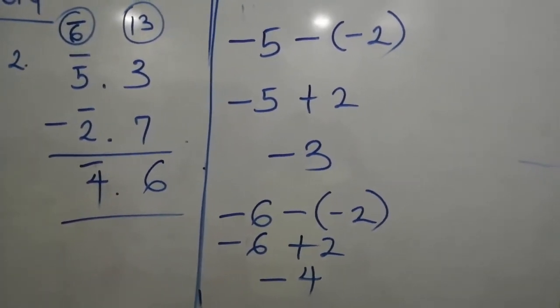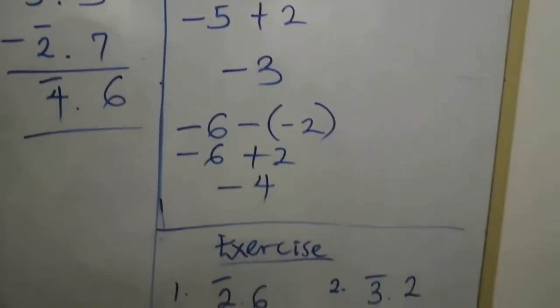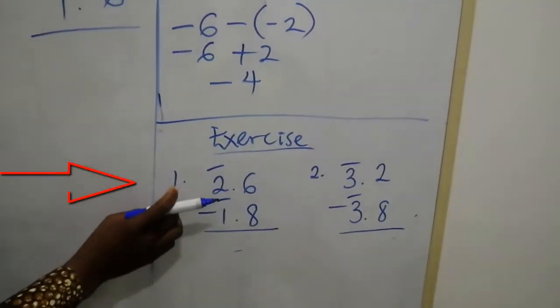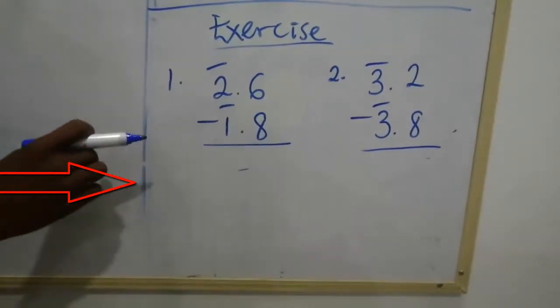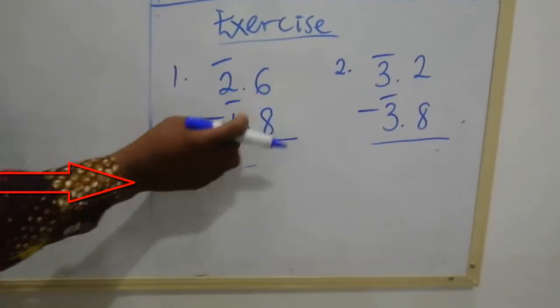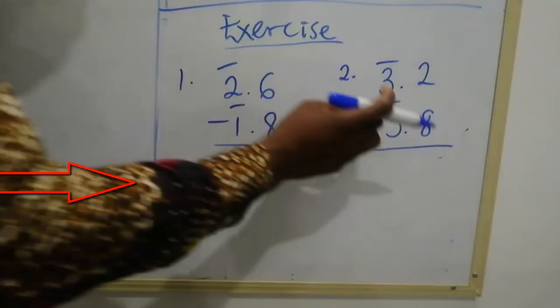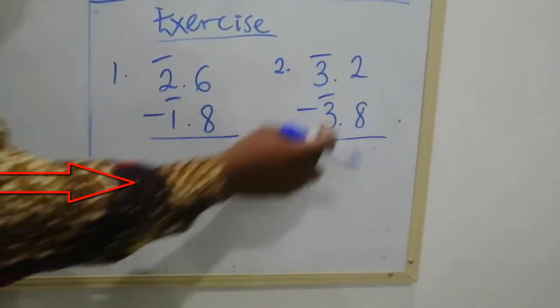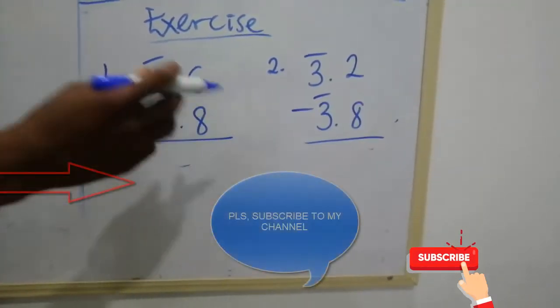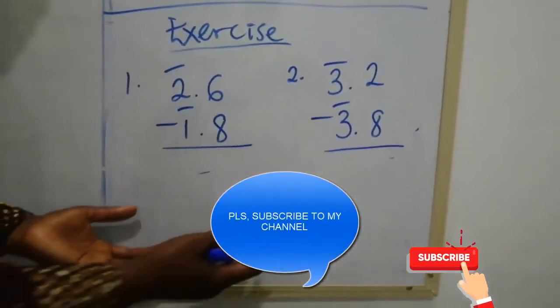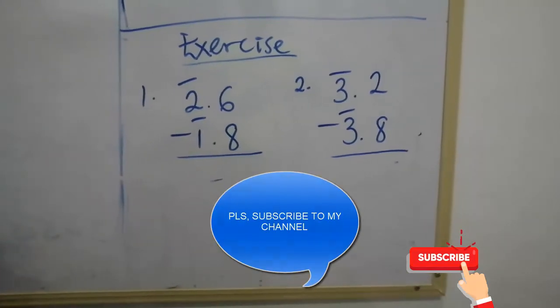Thank you and God bless you. I'm going to leave you with this exercise on subtraction. Bar 2.6, you are taking bar 1.8 away from that. And bar 3.8, take it away from bar 3.2, and send your answer under the comment. Thank you and God bless you.